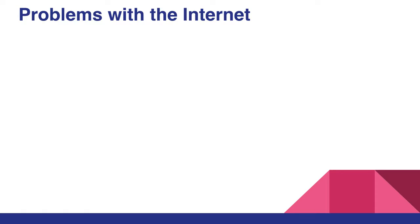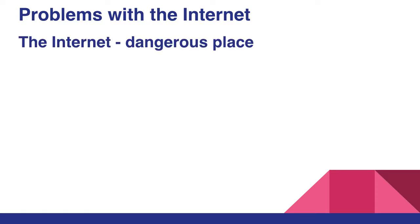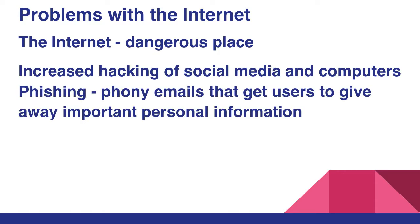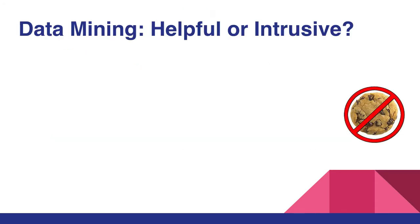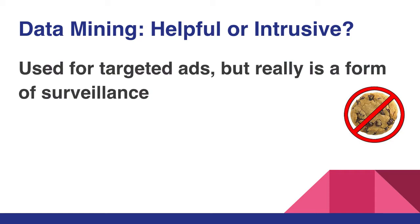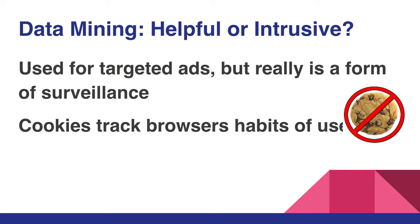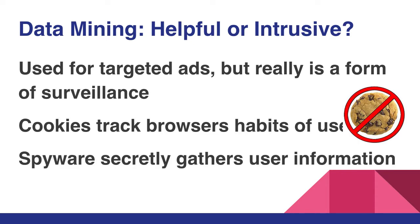The Internet has become a more dangerous place with increased hacking of social media and computers, and phishing — which includes phony emails that get users to give away important information — and the Patriot Act, which lets law enforcement invade online communications. Data mining is said to be used for targeted advertising, but really is a form of user surveillance. Cookies track browsing habits of users and are used for targeted advertising, along with spyware, which is an invasion of privacy as it secretly gathers user information.